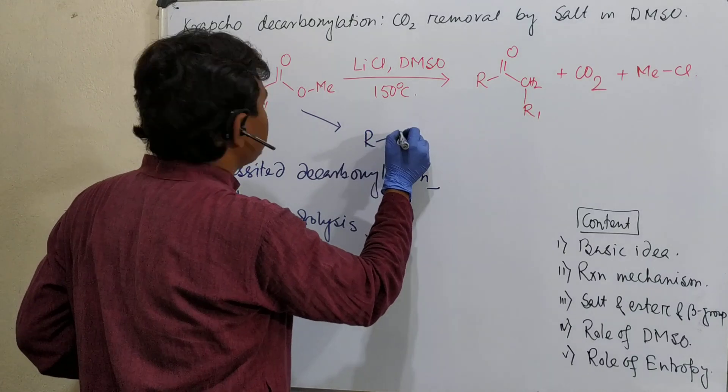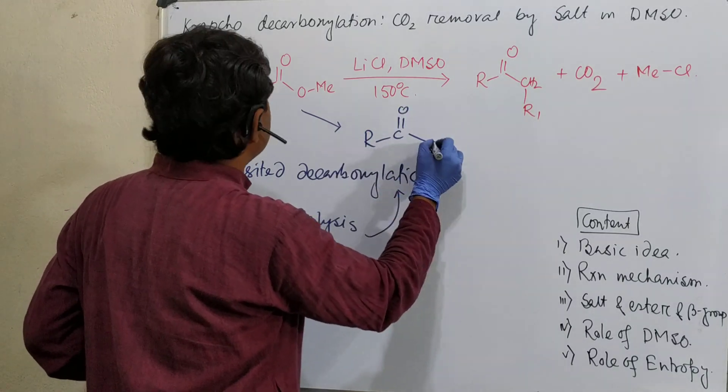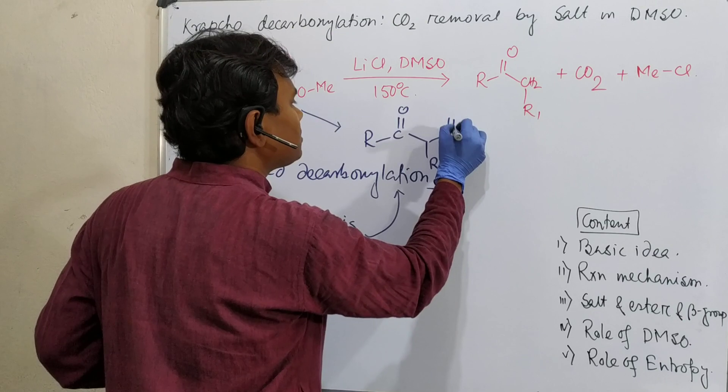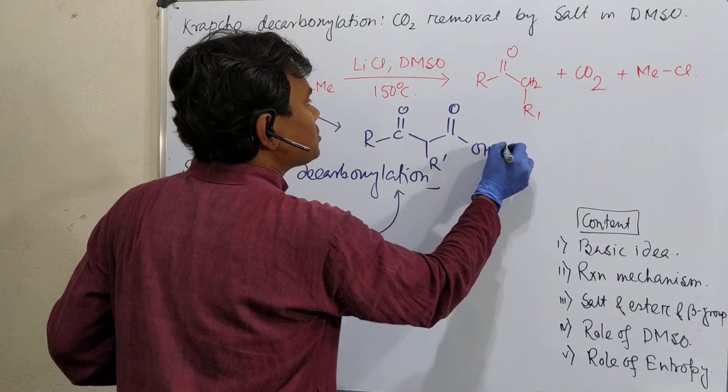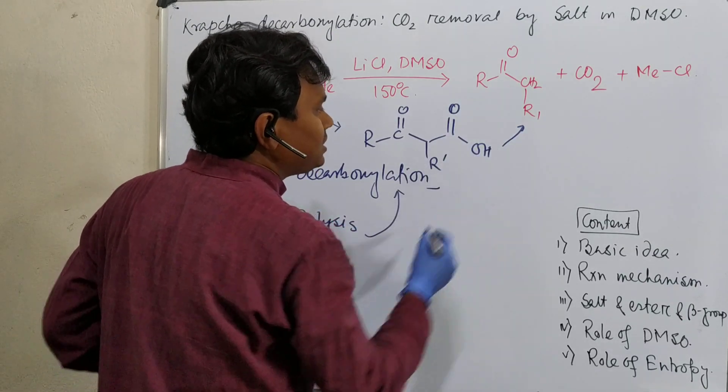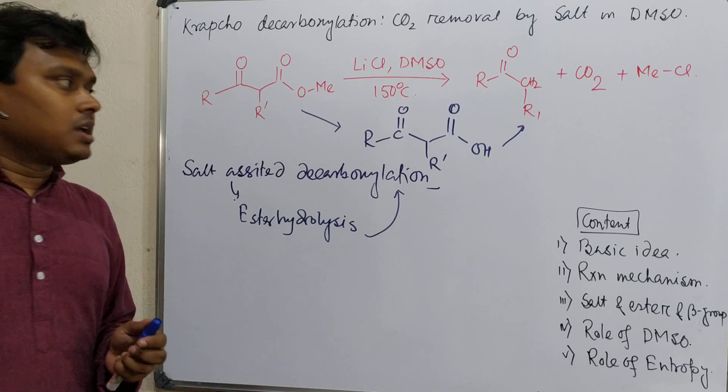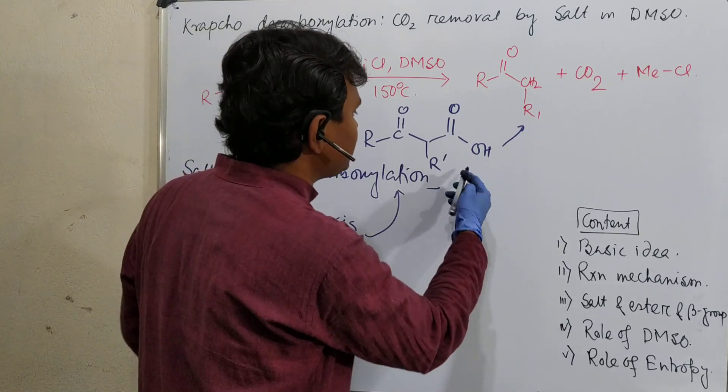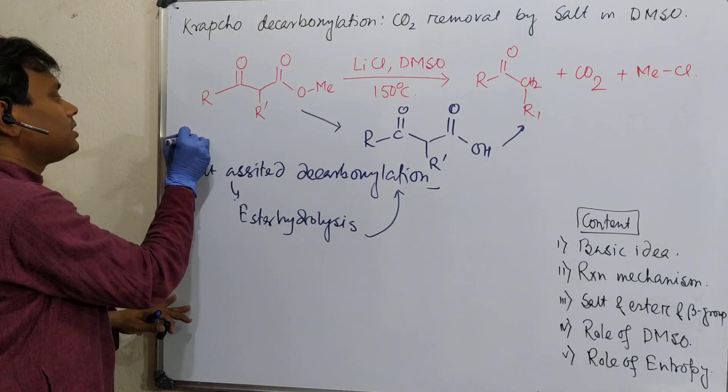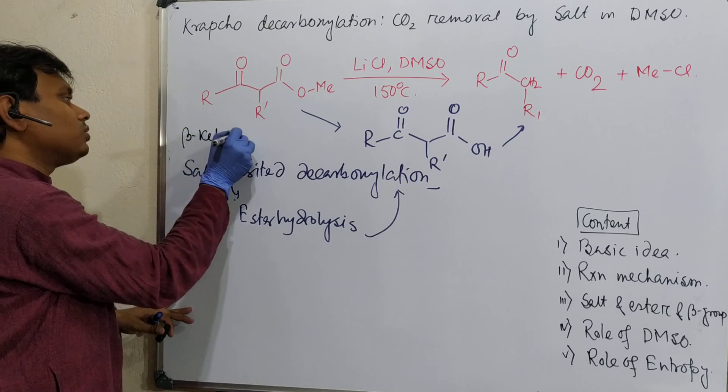So this becomes a beta-keto acid. This is nothing but a beta-keto ester. And I have already discussed in my previous video about how this beta-keto ester undergoes facile decarboxylation under heating through a six-member transition state.